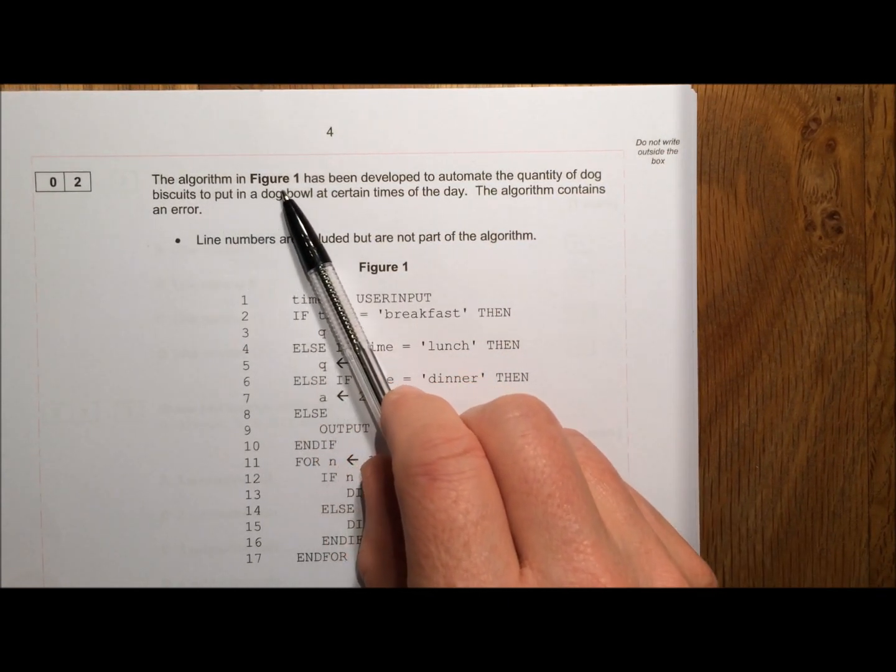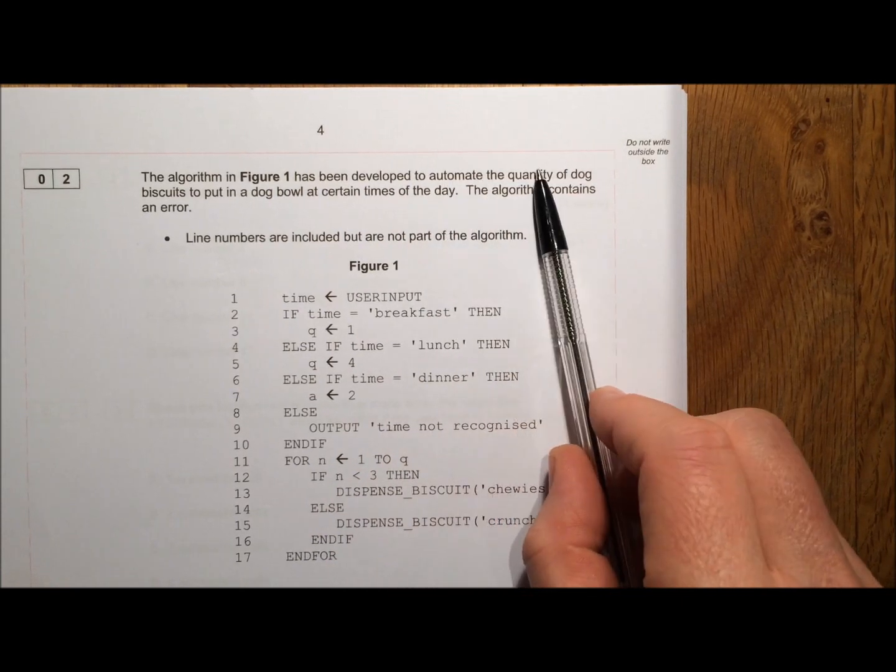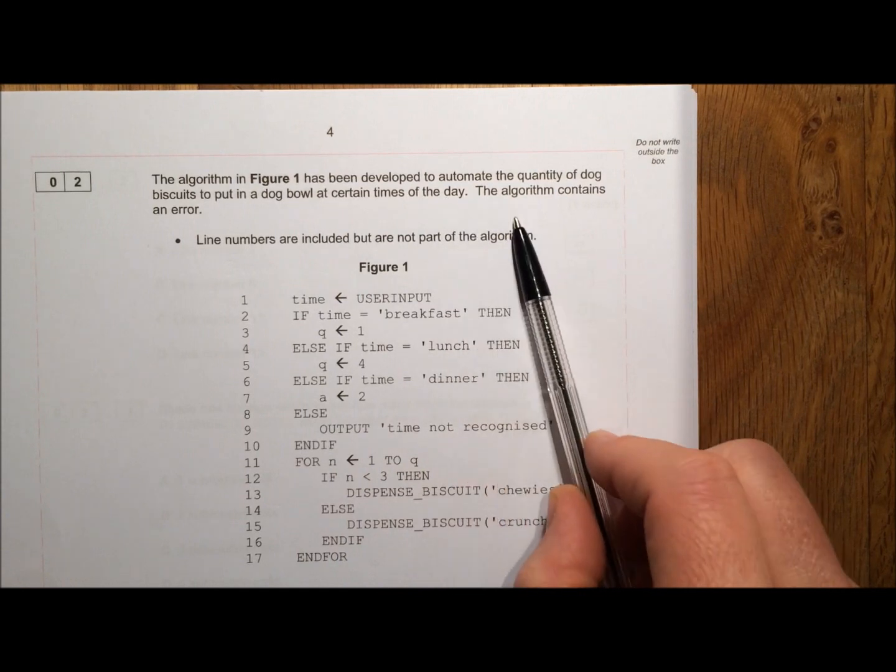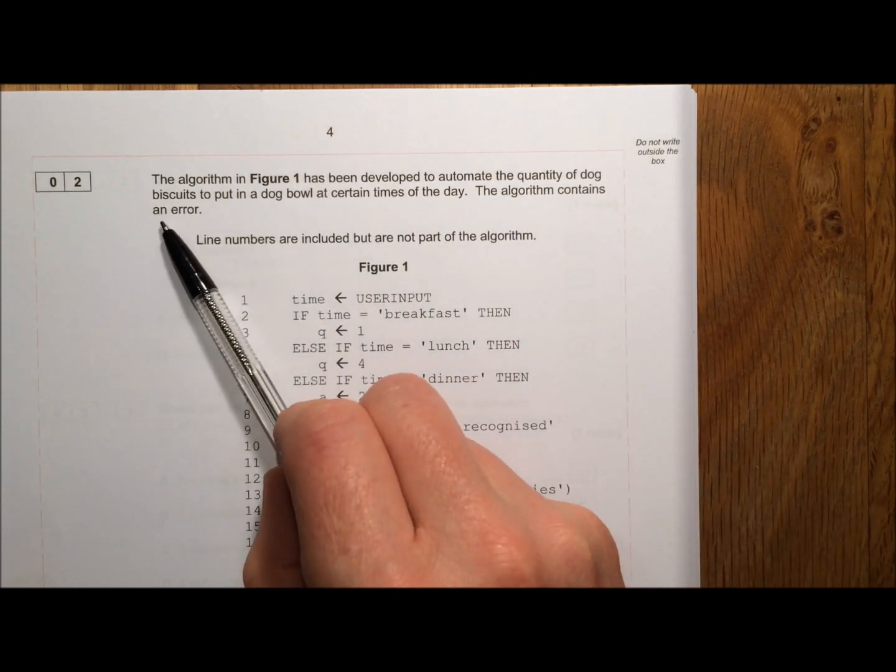So it says to us here, the algorithm has been developed to automate the quantity of dog biscuits to put in a dog bowl at certain times of the day. The algorithm contains an error.